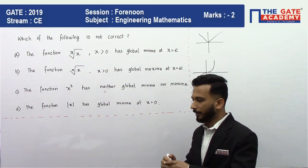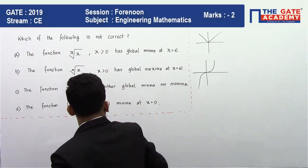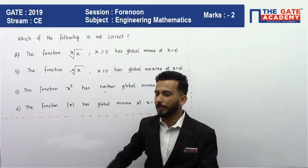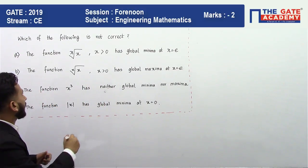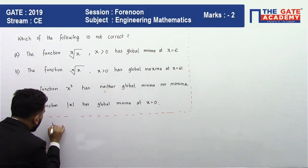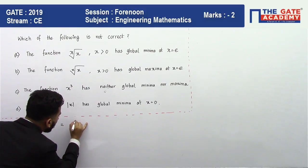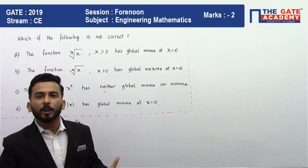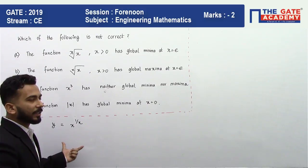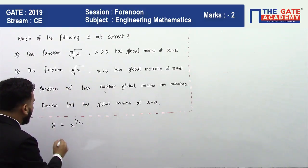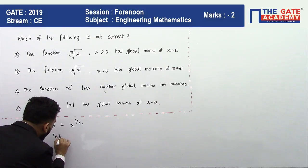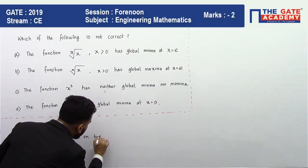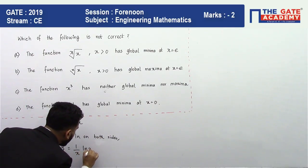We are now left with options A and B, and either one is the final answer. Let's find the maxima and minima of the function x^(1/x). Let y = x^(1/x). To find stationary points, we take the natural log on both sides: ln y = (1/x) · ln x.